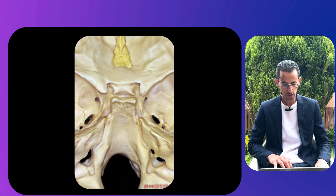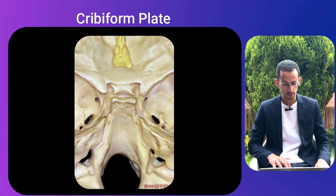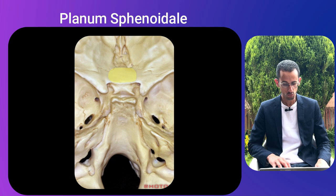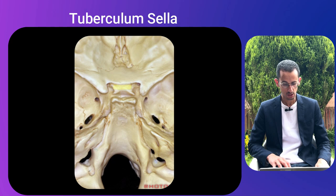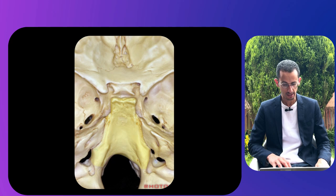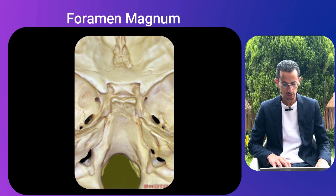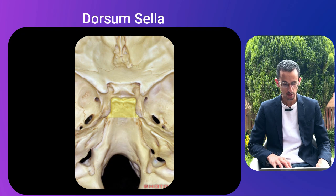In the midline: the cribriform plate of the ethmoid bone, then the planum sphenoidale roofing the sphenoid sinus, the tuberculum sellae, the sella turcica, the clivus, and the foramen magnum. The dorsum sellae represents the upper clivus with the posterior clinoid processes perched on each side.